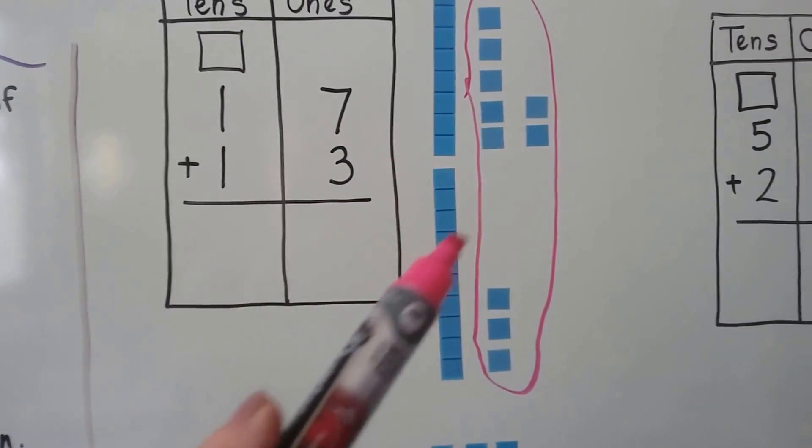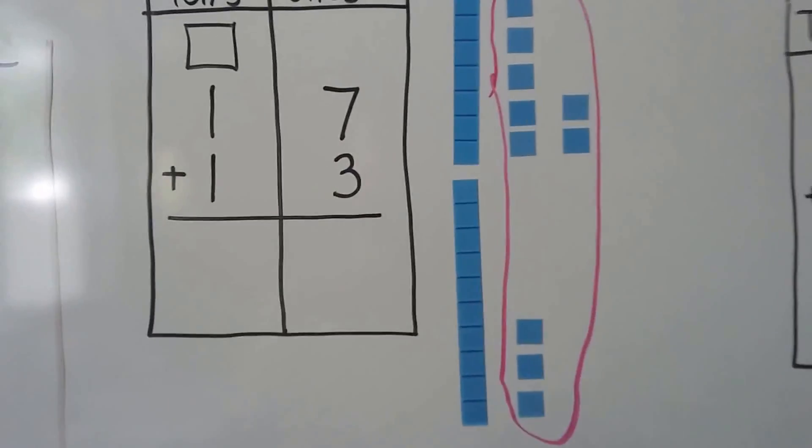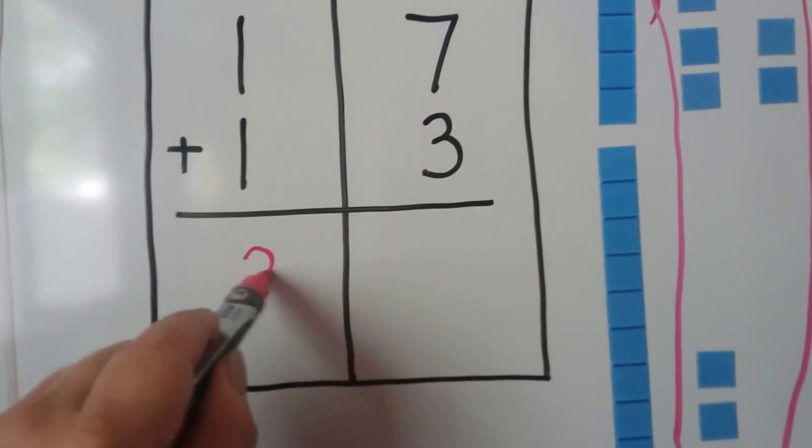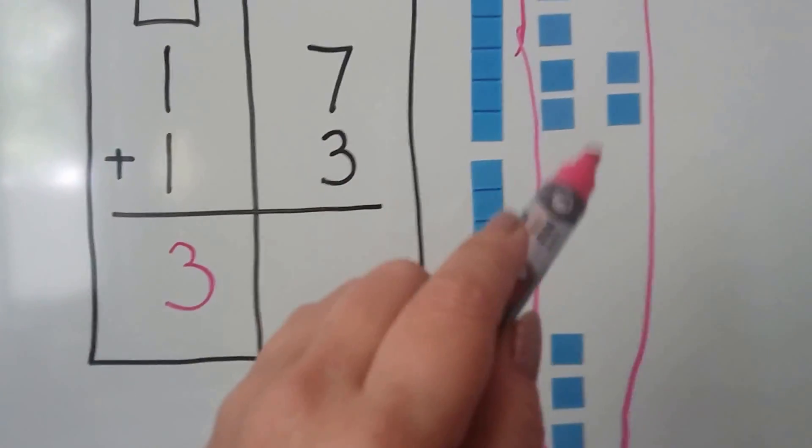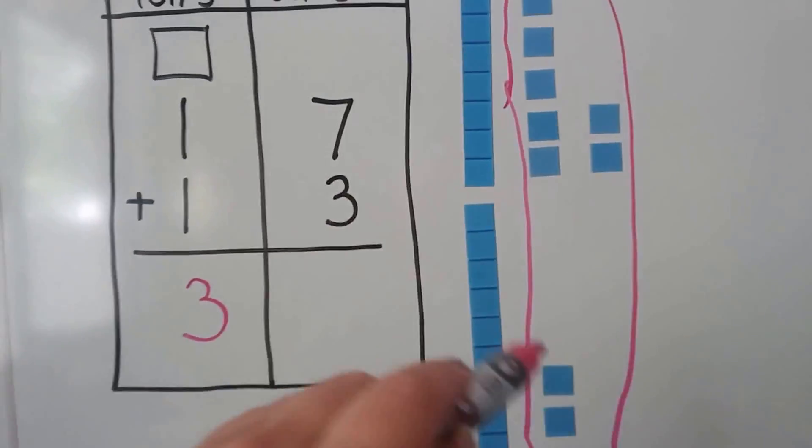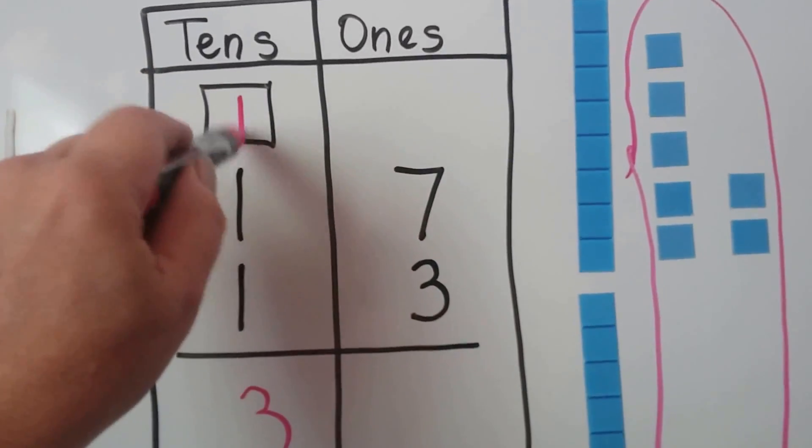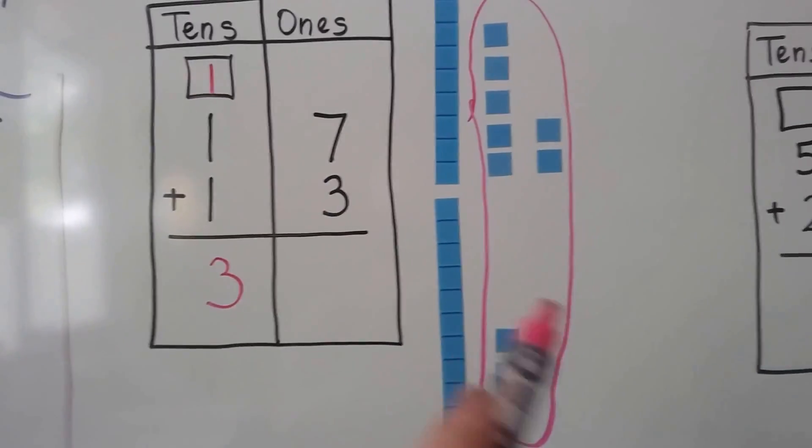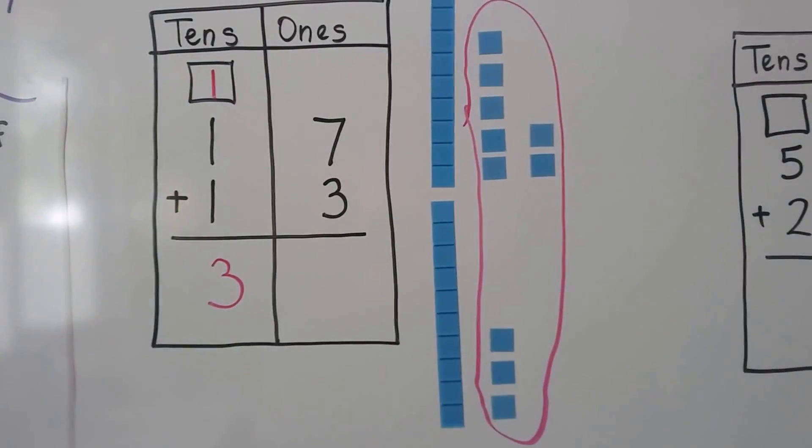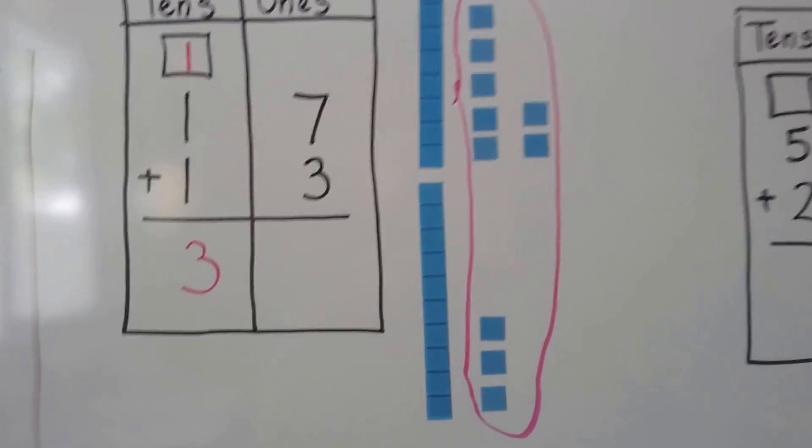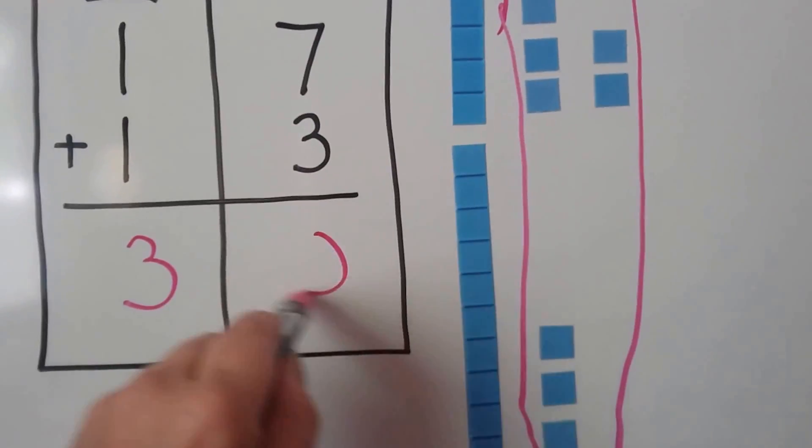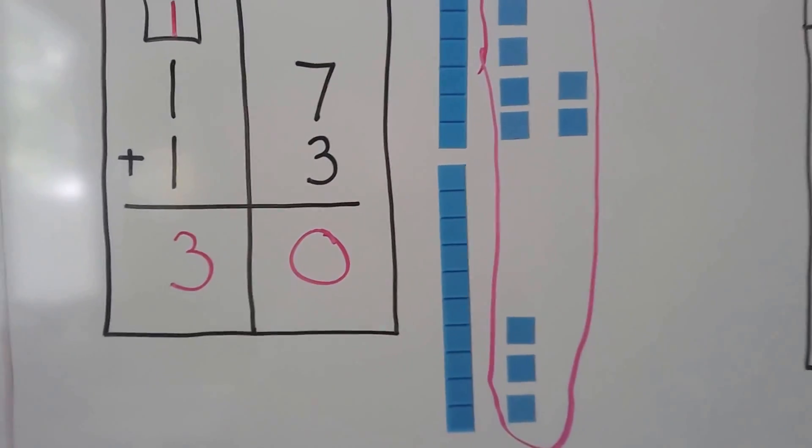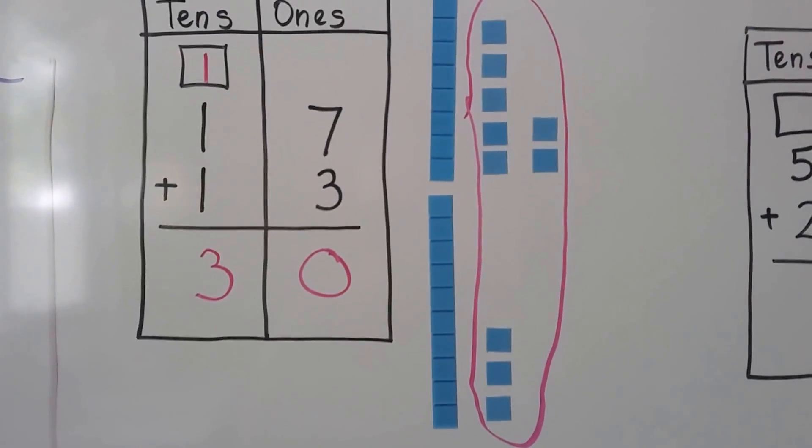Now we have 1, 2, 3 tens. We regrouped these ones as a 10. We can add it to the tens place. And that gave us the 3 tens. How many ones do you see left over outside the circle? None. So we have 0 ones left. So 17 plus 13 equals 30.